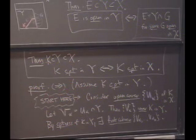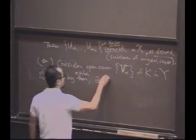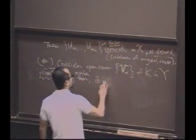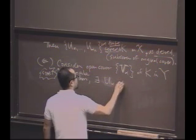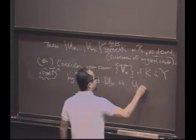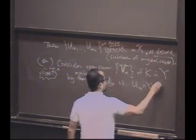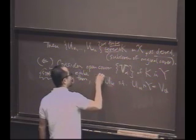So consider an open cover V alpha K in Y. By the theorem, the earlier theorem, there exists U sub alpha such that U sub alpha intersect Y equals V sub alpha. And these are open U sub alpha.